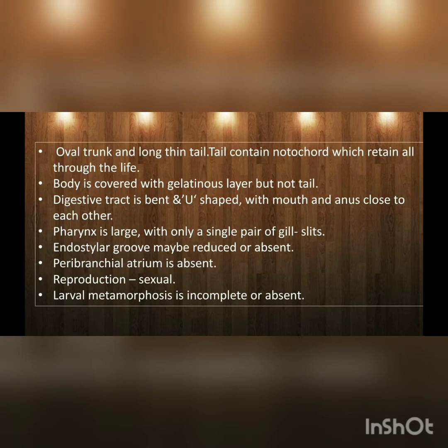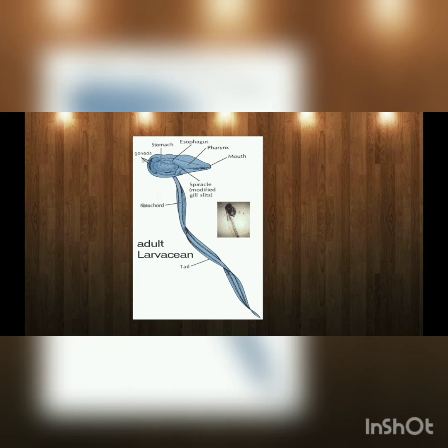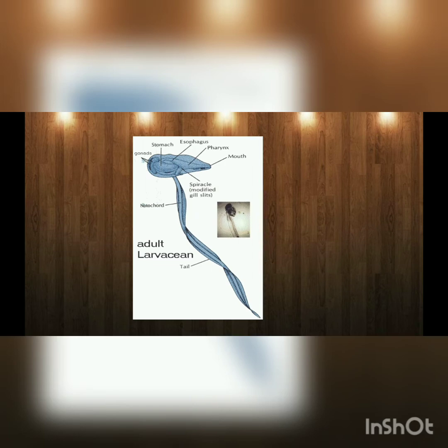It has an oval trunk and a long, thin tail. The tail contains a notochord which is retained throughout life — the tail is permanent. Except for the tail, the body is covered by a gelatinous layer. The digestive tract is bent and U-shaped, with the mouth and anus close to each other. The pharynx is large and it has only a single pair of gill slits.